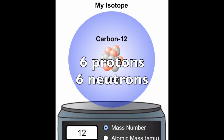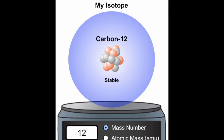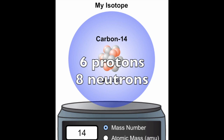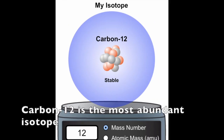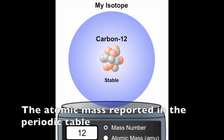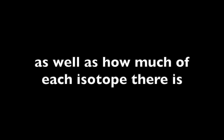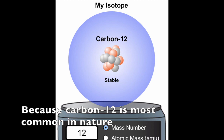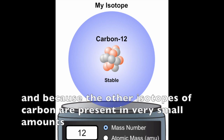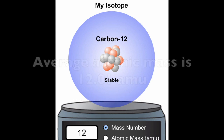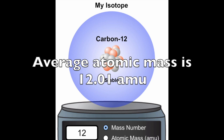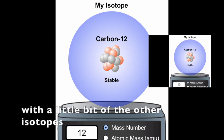For example, a single chunk of carbon could have some carbon-12 in it with six protons and six neutrons. It might also have a little bit of carbon-13 with six protons and seven neutrons, and maybe a tiny tiny amount of carbon-14 which has six protons and eight neutrons. Carbon-12 is the most abundant isotope. The atomic mass reported in the periodic table is a weighted average, meaning it accounts for the mass of each isotope as well as how much of each isotope there is. So because carbon-12 is most common and the other isotopes are present in very small amounts, the average atomic mass is 12.01 AMU.